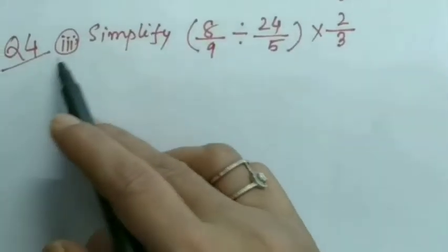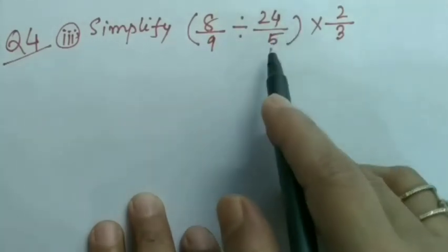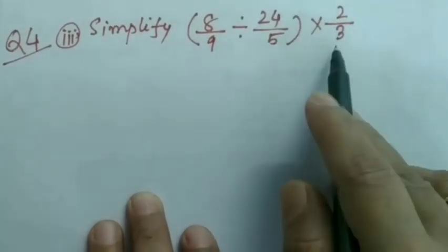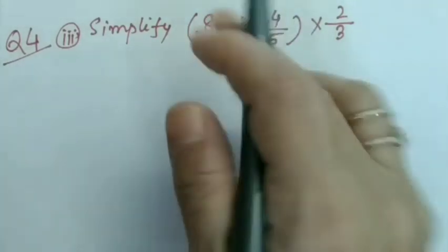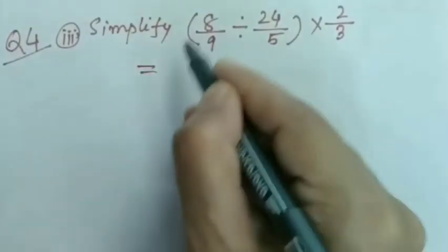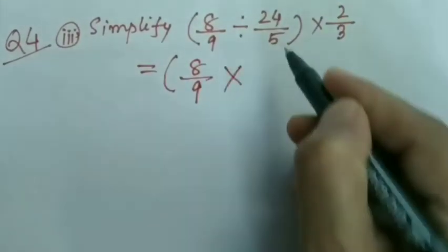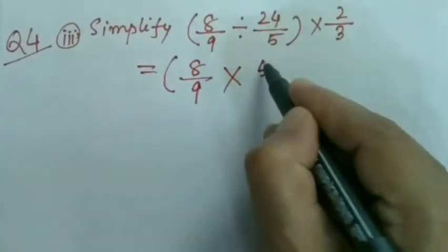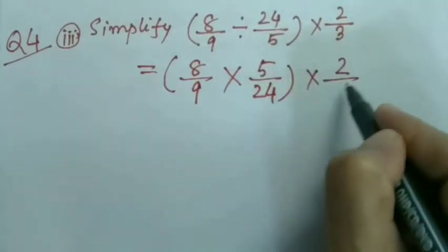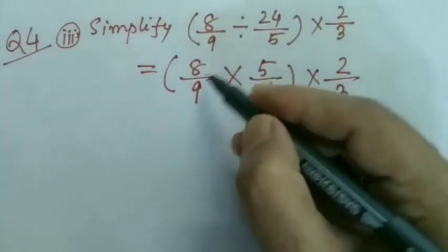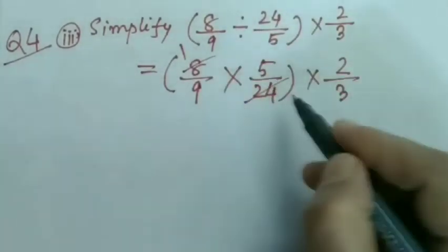Question number 3: Simplify (8/9 ÷ 24/5) × 2/3. First we do the operation inside the bracket: 8/9, then change this to its reciprocal, which will be 5/24 × 2/3. Now I'm canceling out wherever possible. 8÷8=1, 24÷3=8, so this becomes 1/3.